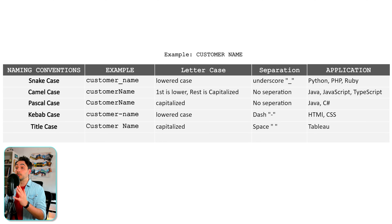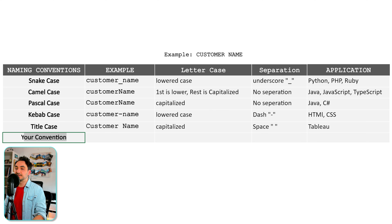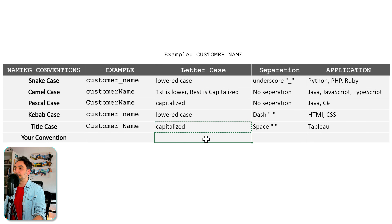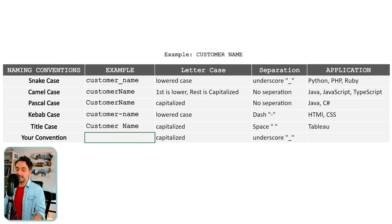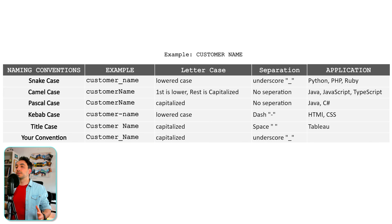Of course, you don't have to follow one of those predefined naming conventions — you can make your own rules and guidelines. For example, let's say my naming convention uses capitalized words separated by underscores. Applying those rules to 'customer name' gives: Customer_Name. And with that, we have defined our own custom naming convention.